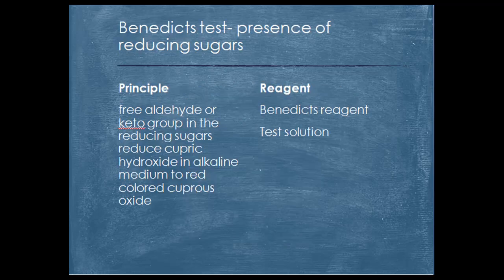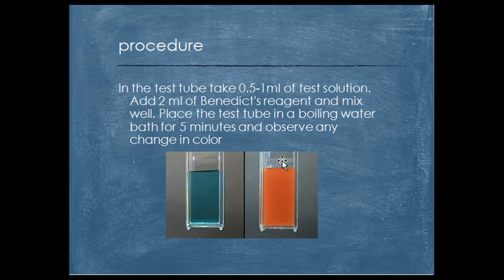Another test is the Benedict test, which is used to check the presence of reducing sugar. Free aldehyde or keto groups in reducing sugar reduce cupric hydroxide in an alkaline medium to a red-colored cuprous oxide. These are the reagents used. You can see the presence of red color solution, which confirms the positive test.